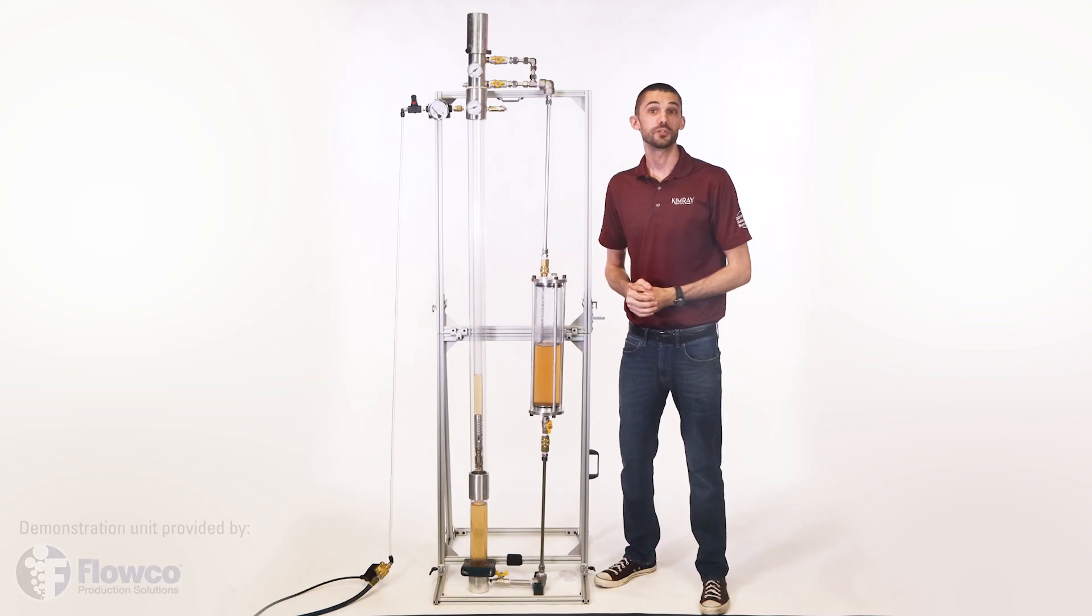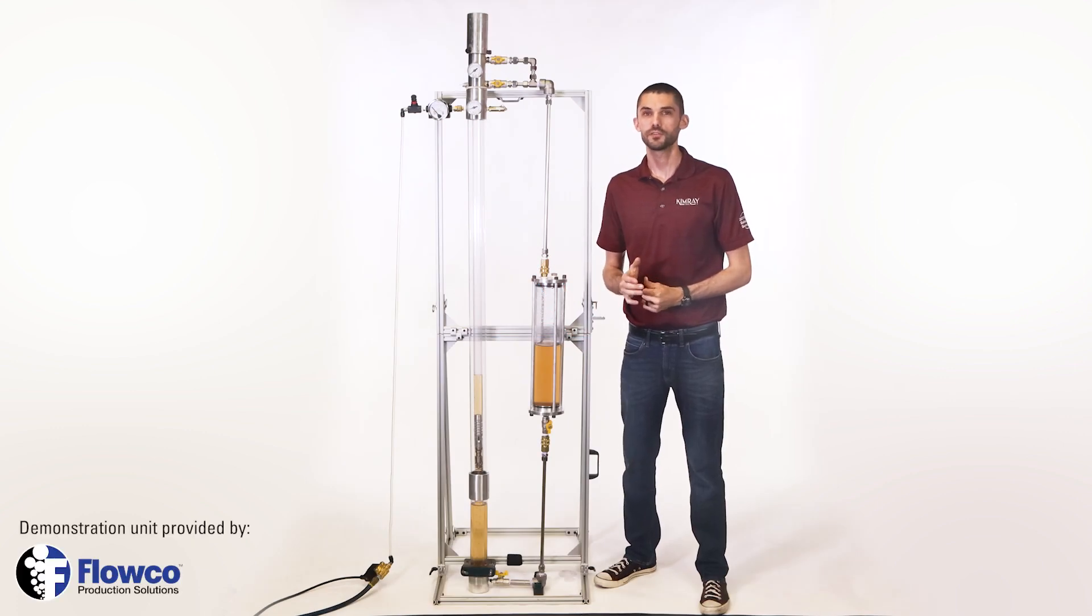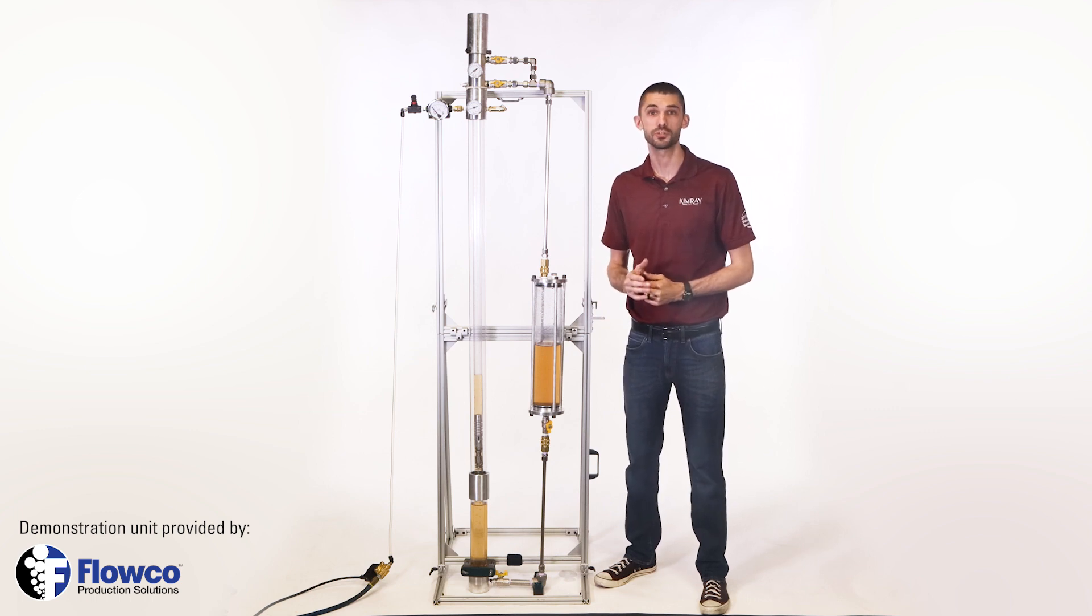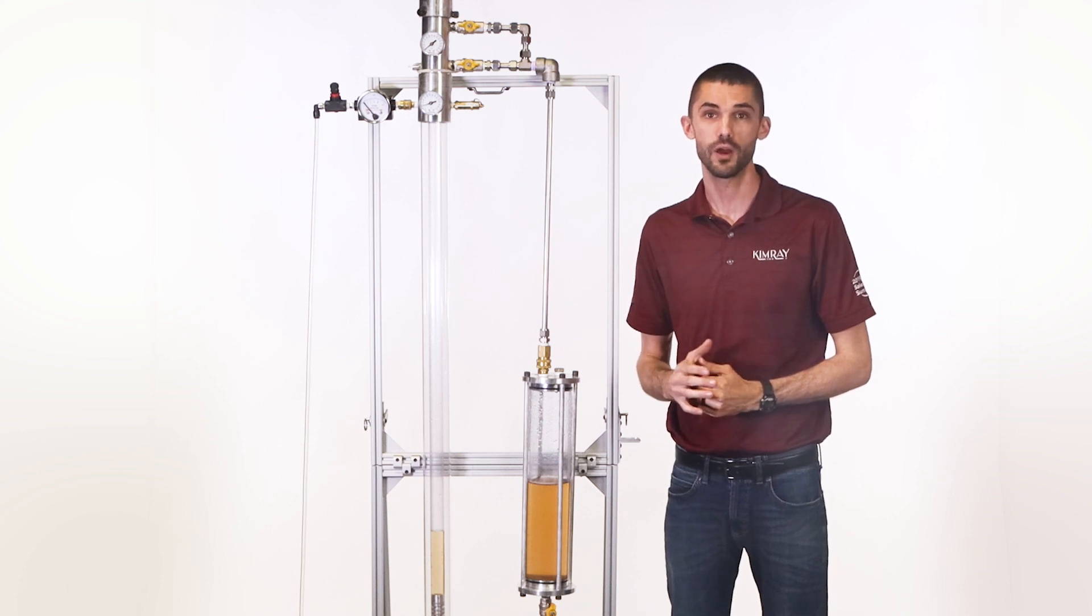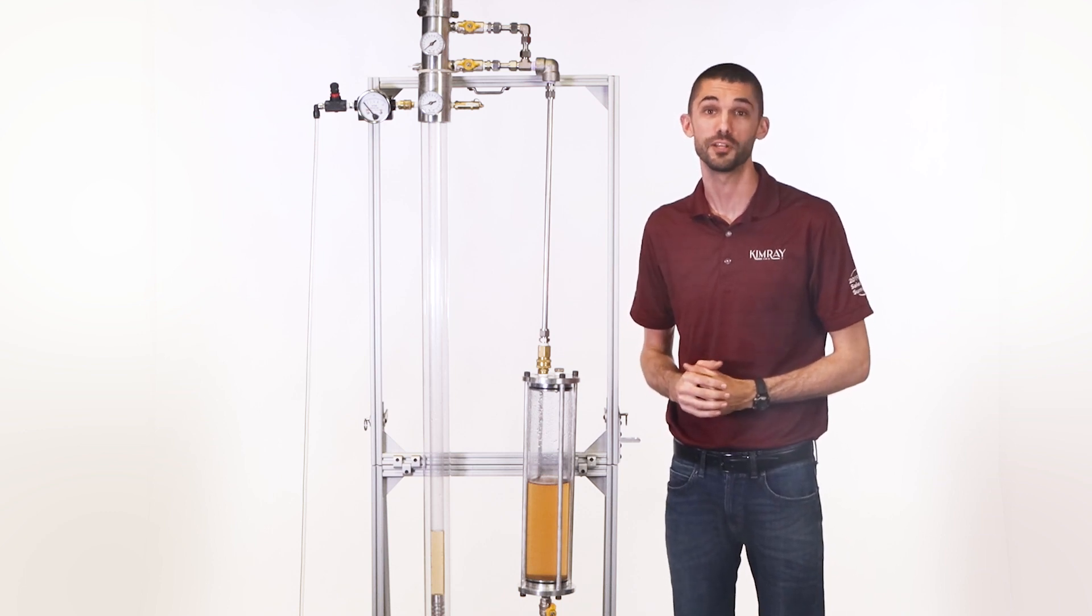Plunger lift is a great option for artificial lift. It's often the first form of artificial lift producers use because they can employ it without a large expense or a work over rig. It's more cost-effective than PCP and rod lift and can typically be installed in about a day.